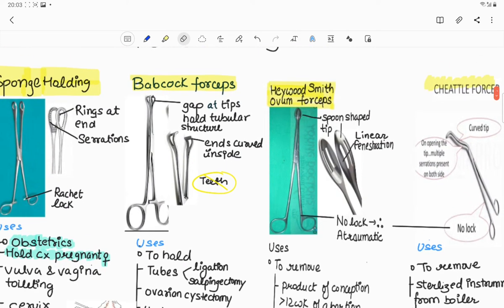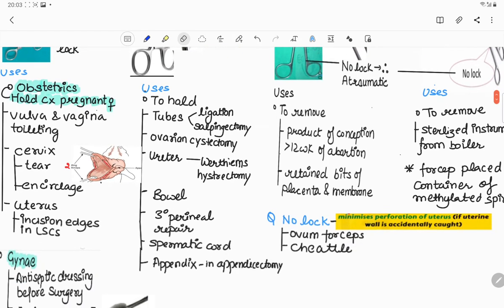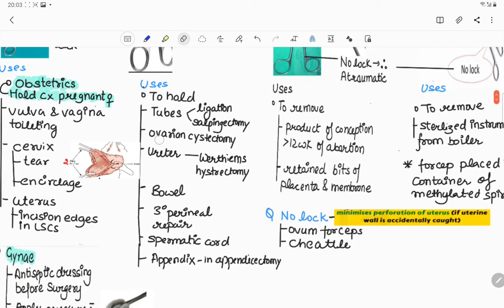Sixth forceps is Babcock forceps. As you can see its ends are curved inside and it contains a gap at the tips to hold tubular structures, but it doesn't contain any teeth, therefore it is used to hold delicate structures. Number one is tubes during ligation and salpingectomy. Number two is ovaries during ovarian cystectomy. Number three is ureter during Wertheim's hysterectomy. Number four is bowel. Number five is during CPT or perineal repair. Number six is spermatic cord. Number seven is appendix during appendicectomy.